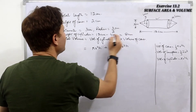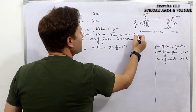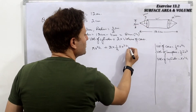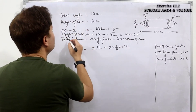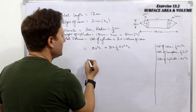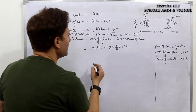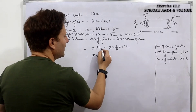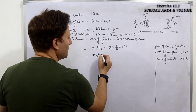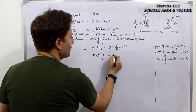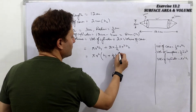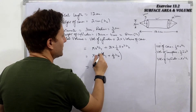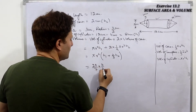Let the height of the cylinder be h1 and height of each cone be h2 = 2 cm. The height of the cylinder h1 = 12 − 2 − 2 = 8 cm. Taking π and r² as common, the expression becomes πr²(h1 + (2/3)h2). Now substituting π = 22/7, r = 3/2, h1 = 8, and h2 = 2.